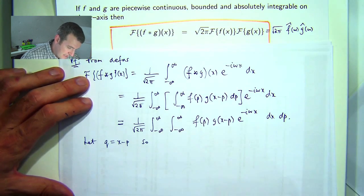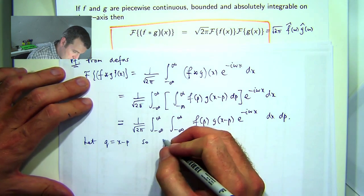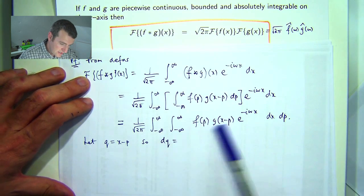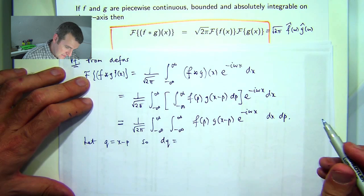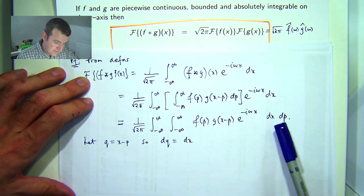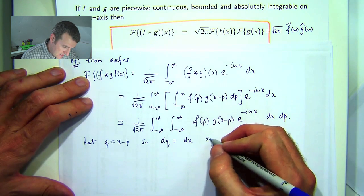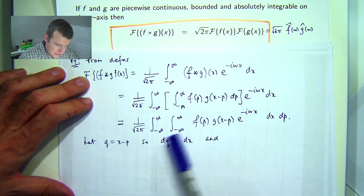Okay, so if that's the case, then dq, so in the inside integral, dq would be dx. And x would be p plus q.